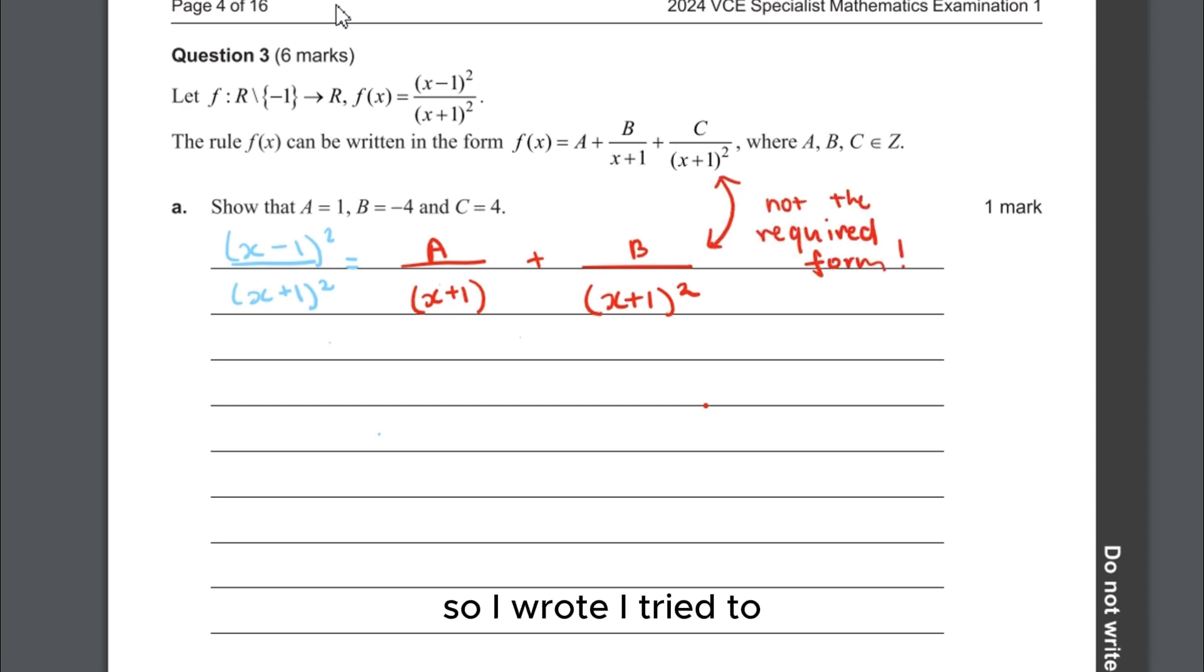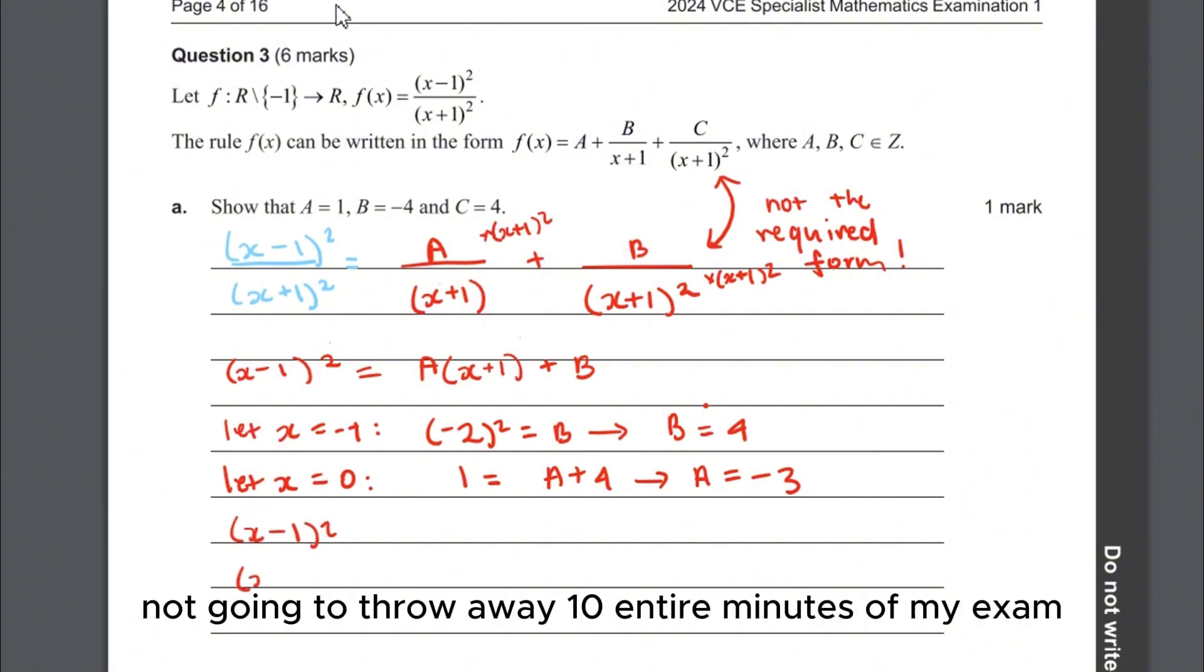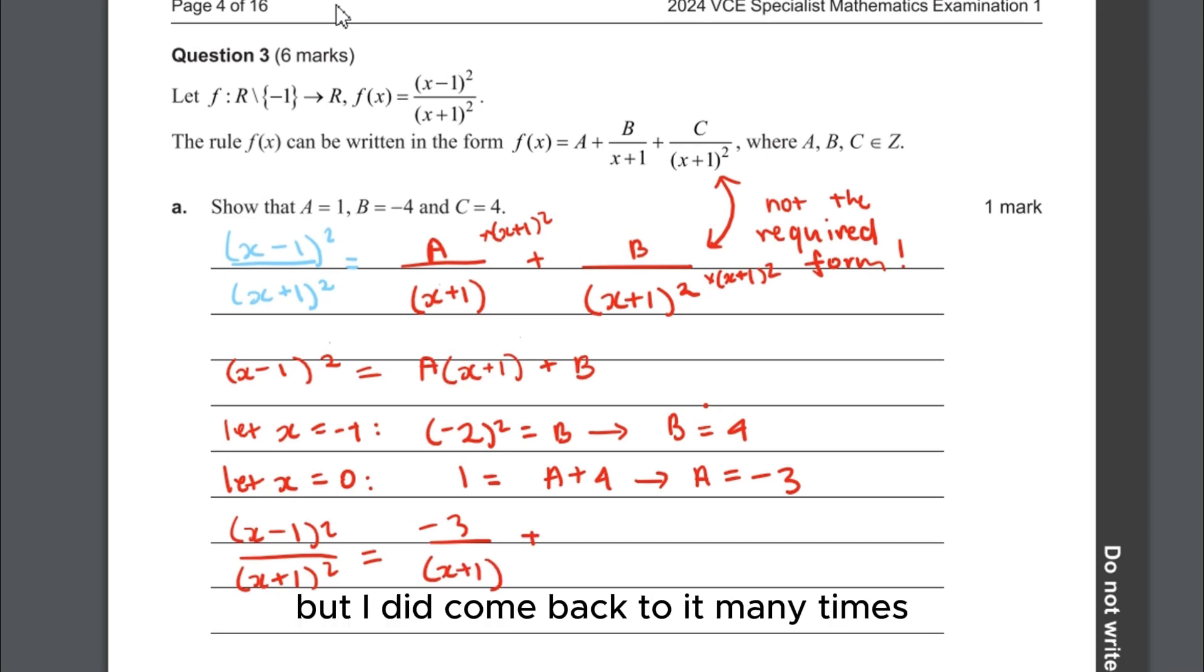I just went straight to trying to rewrite this part into partial fractions with repeated denominator the way I was most used to doing. As you can see, this is what I wrote in the exam. I was really panicking because I felt like I was cooked if I couldn't get this one marker. My only comfort was that it was a one marker, so I was not going to throw away 10 entire minutes on this.